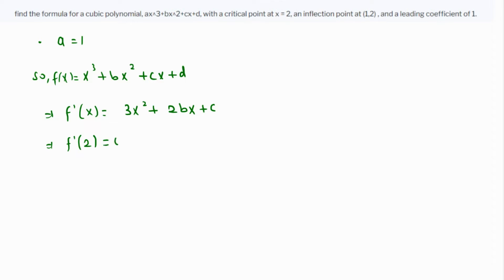Substituting x=2 into f'(x): f'(2) = 3(2²) + 2b(2) + c = 12 + 4b + c = 0. Let's call this equation 1.